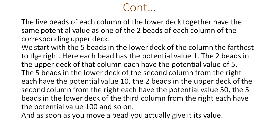The five beads of each column of the lower deck together have the same potential value as one of the 2 beads of each column of the corresponding upper deck. We start with the 5 beads in the lower deck of the column the furthest to the right. Here each bead has the potential value 1. The 2 beads in the upper deck of that column each have the potential value of 5.